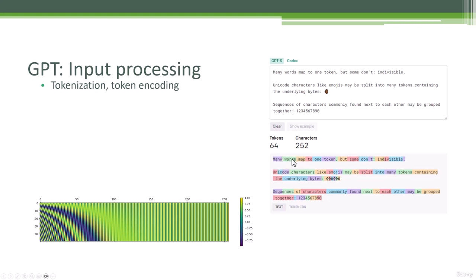Many becomes its own token, words becomes its own token, so on and so forth. Note that punctuation is generally its own token as well. And some words get split up into multiple tokens. Like here, indivisible is not indivisible at all. It's actually three separate tokens: one for ind, one for iv, and one for isable.